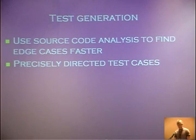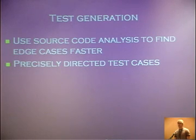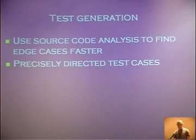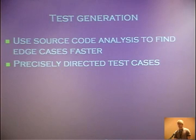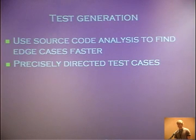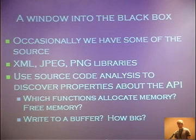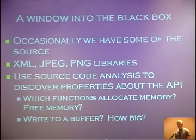Some other uses of source code analysis: test generation — where you're not actually looking for defects, but using it to mitigate the limited power of analysis to find defects that you know are in the source code but can't find with a tool. You can use source code analysis to find edge cases faster and create precisely directed test cases. If you know that a variable is compared against seven options, you can generate test cases that exercise exactly those seven options, rather than random test cases that produce a lot of invalid input. And relevant to many people here today: source code analysis can provide a window into the black box.